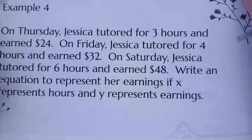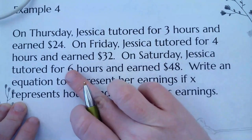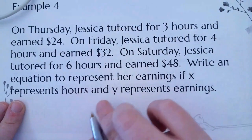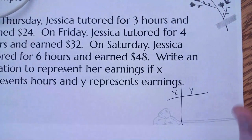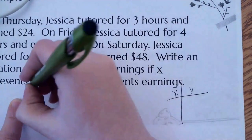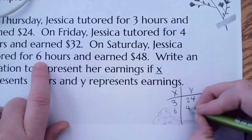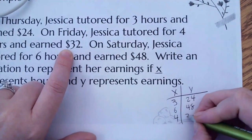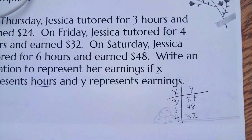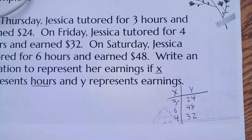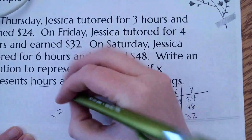Number 4: On Thursday, Jessica tutored for 3 hours and earned $24. On Friday, she tutored 4 hours and earned $32. On Saturday, 6 hours and earned $48. Write an equation where x represents hours and y represents earnings. Setting up a table: at 3 hours she got $24, 6 hours she got $48, 4 hours she got $32. What number times 3 gives me 24? Hopefully you said 8. So the formula is y equals 8x.